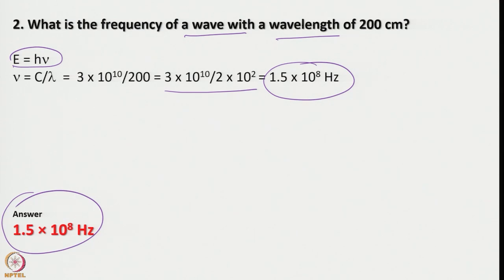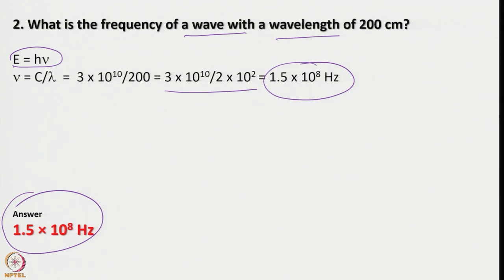Once we know the equation, we can calculate wavelength if the frequency is given, or if wavelength is given, frequency can be calculated. We can also calculate the energy corresponding to that frequency of electromagnetic radiation. Now another one: a radio transmitter transmits a frequency of 100 hertz. What is the wavelength of this? Again you can use the same analogy. Here ν equals 100 hertz is given, and we have to calculate the wavelength.